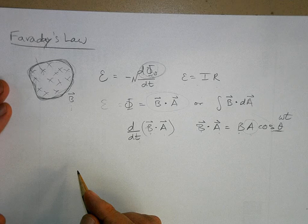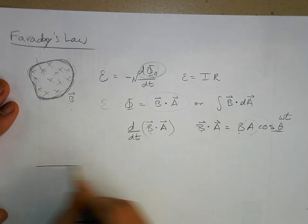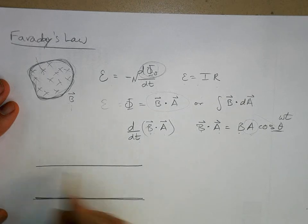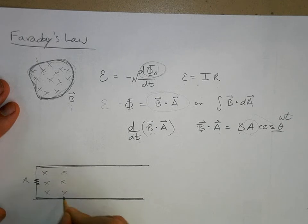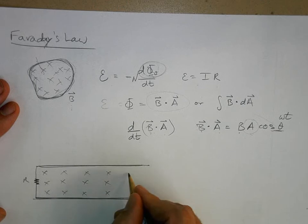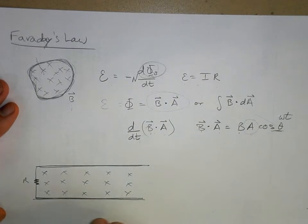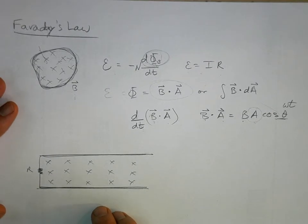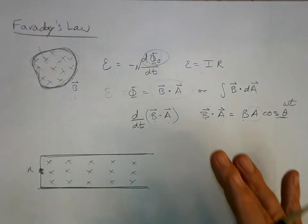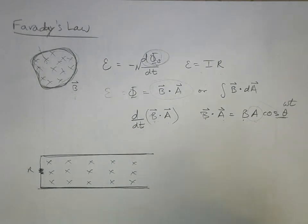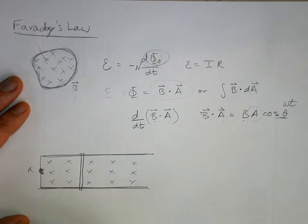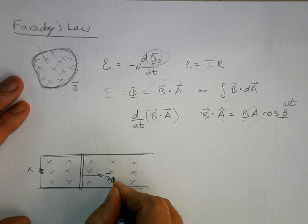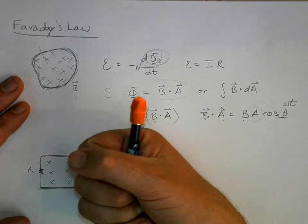Now a motional EMF problem — these are very common. You'll have two rails made out of metal so they can conduct, connected with some kind of wire or conductor. You might have a resistor over here, and then you have some magnetic flux contained in this space — almost always uniform. These things really only exist in the imagination of physics teachers; they're thought-experiment types of things. Then you put a conducting bar across the rails and apply a force to it.